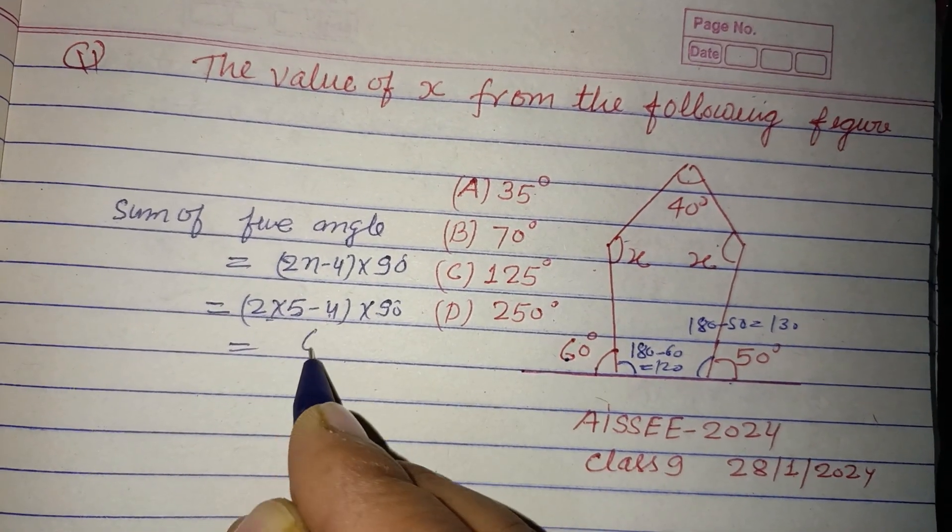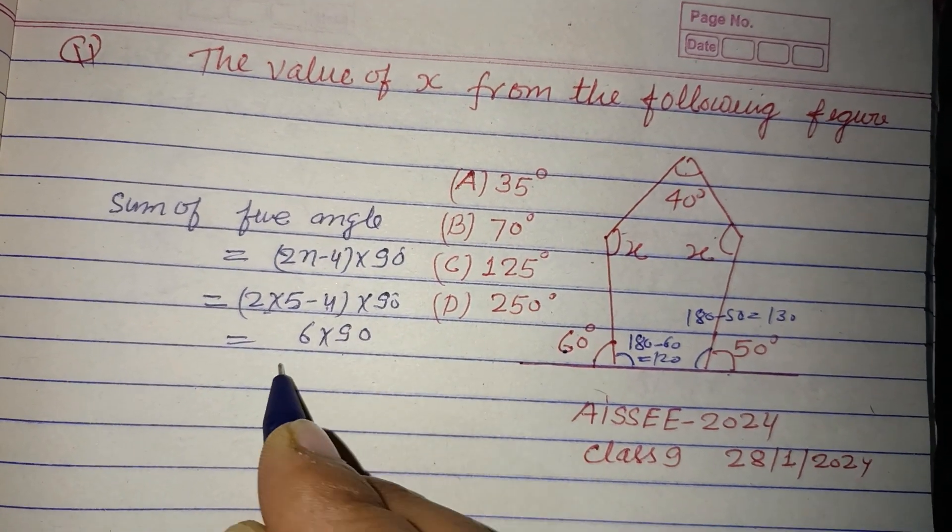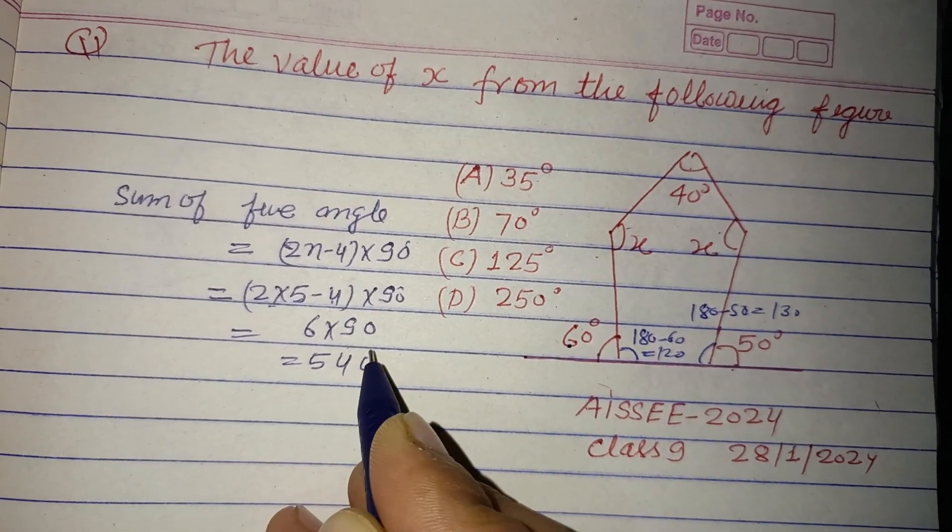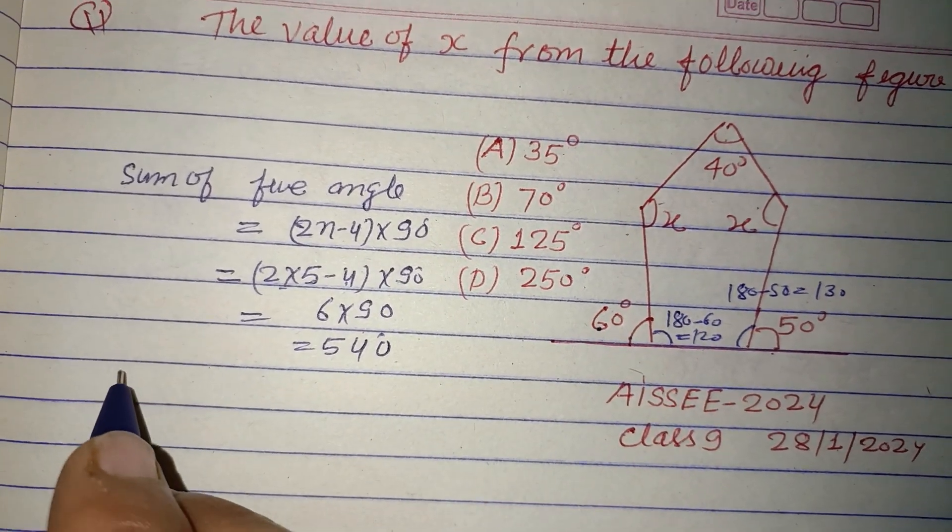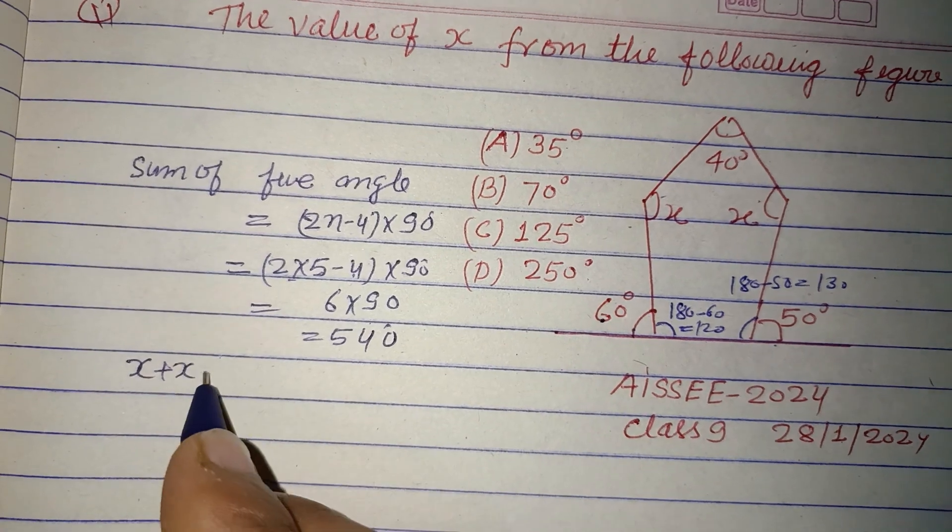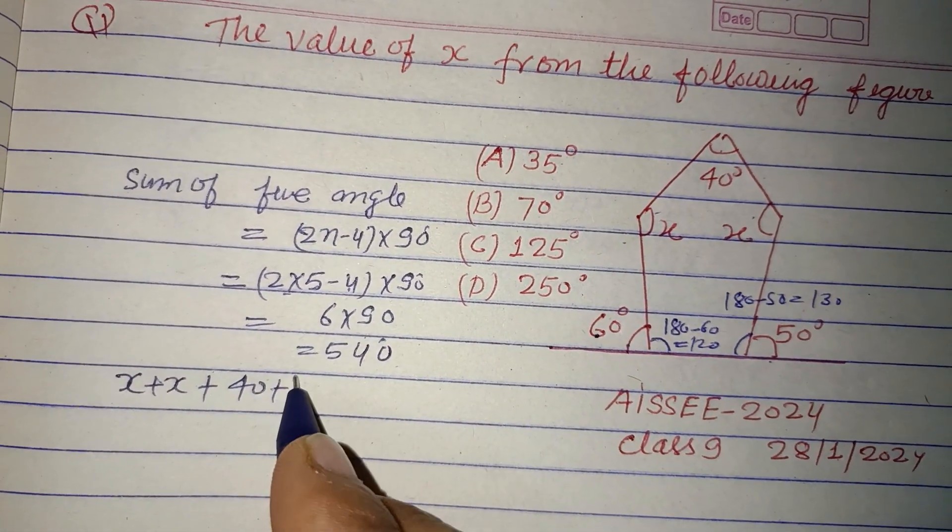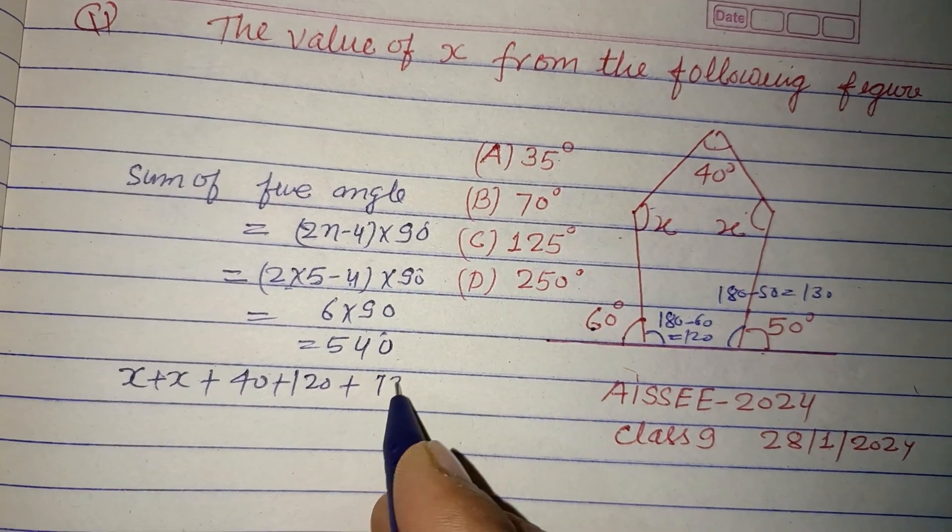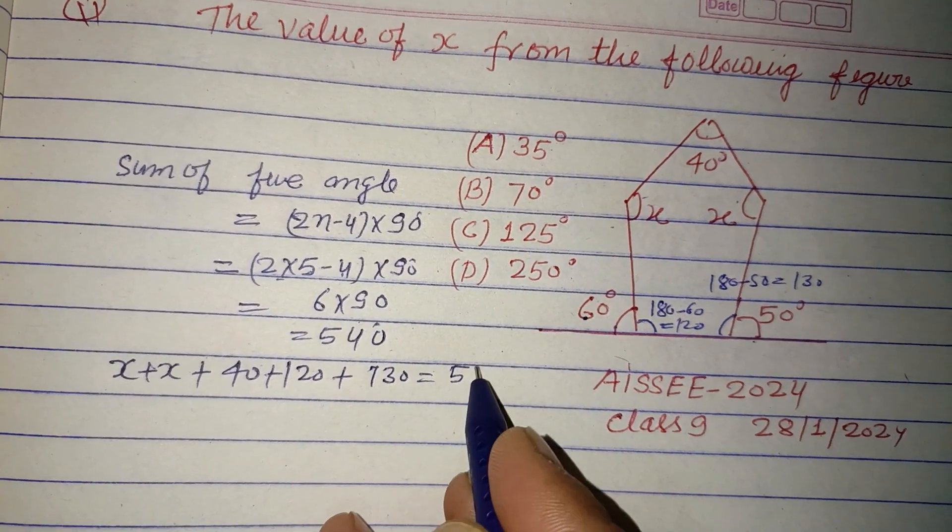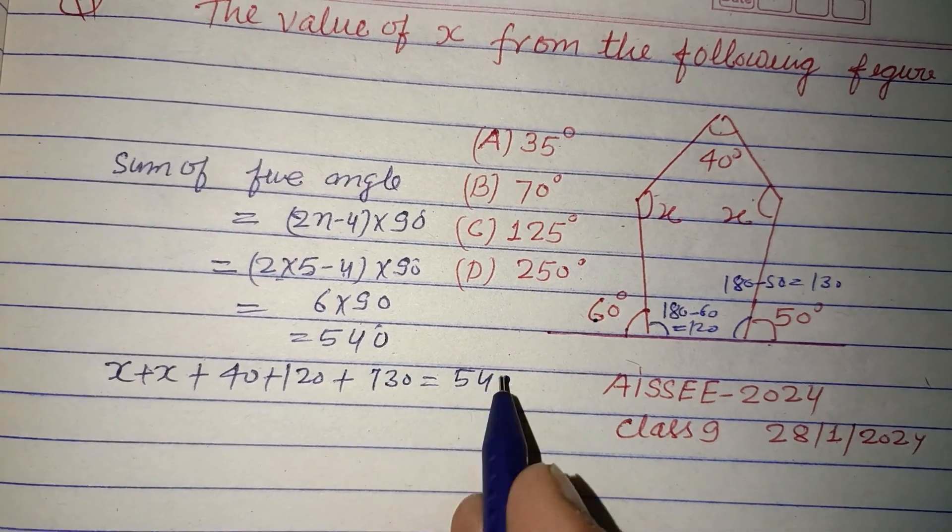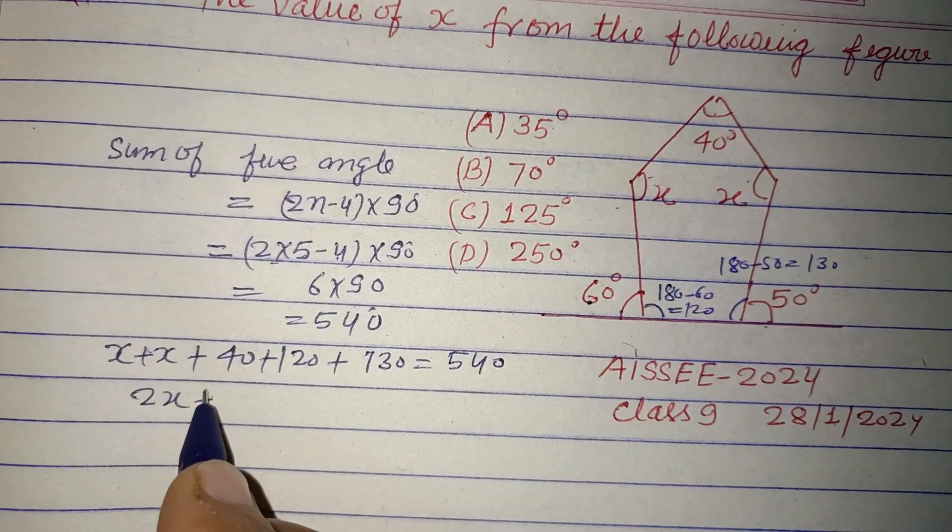Now adding these angles: x plus x, 2x angle, and one is 40, another is 120, and this is 130 equal to 540. So this is 2x plus 120 plus 130 is 250, plus 40 is 290 equal to 540.